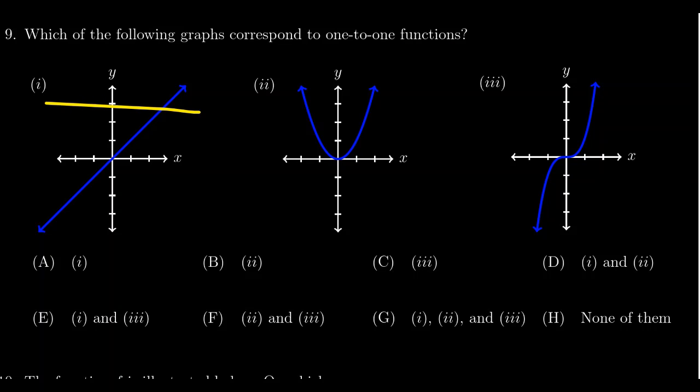So if we start hitting the graph with horizontal lines, it needs to hit the graph only in one point. So this tells us that the first graph is, in fact, a one-to-one function.